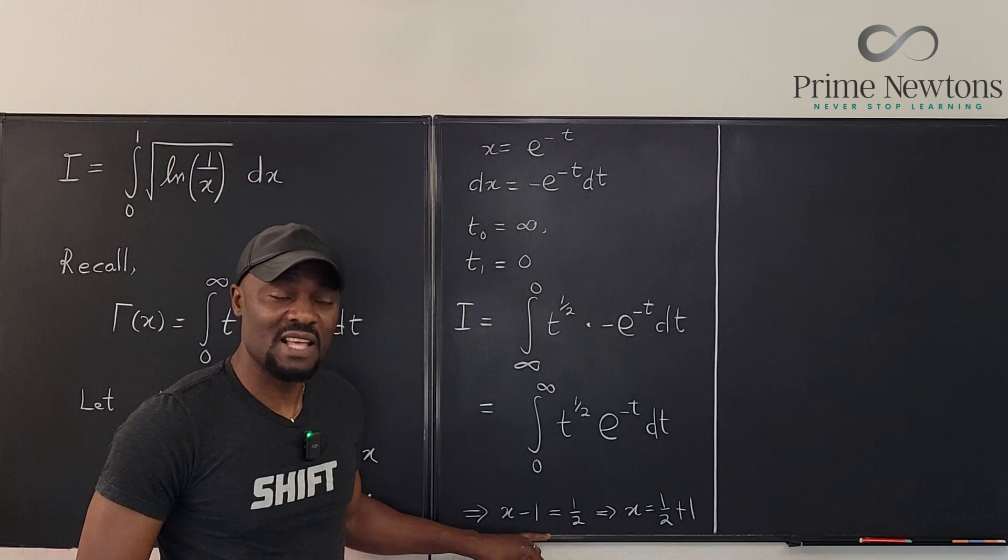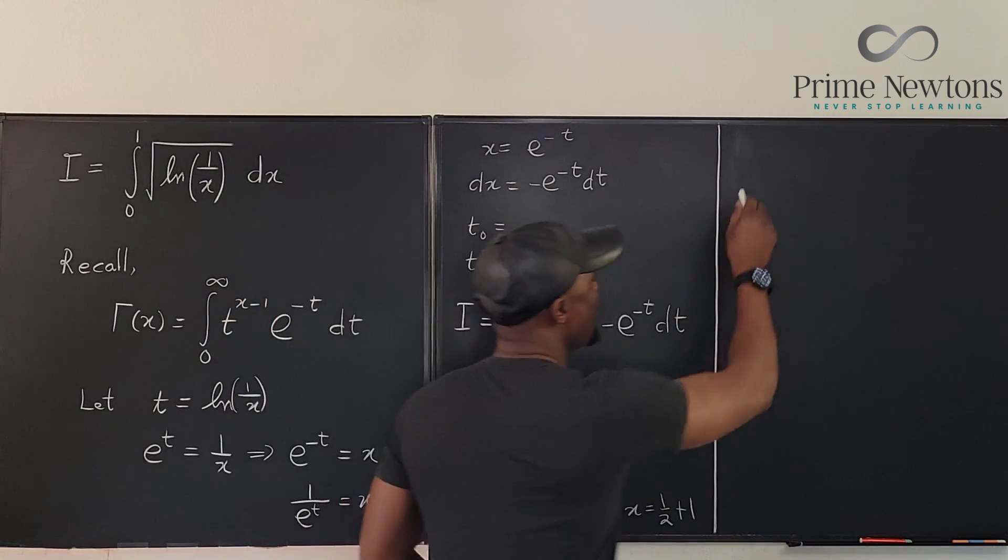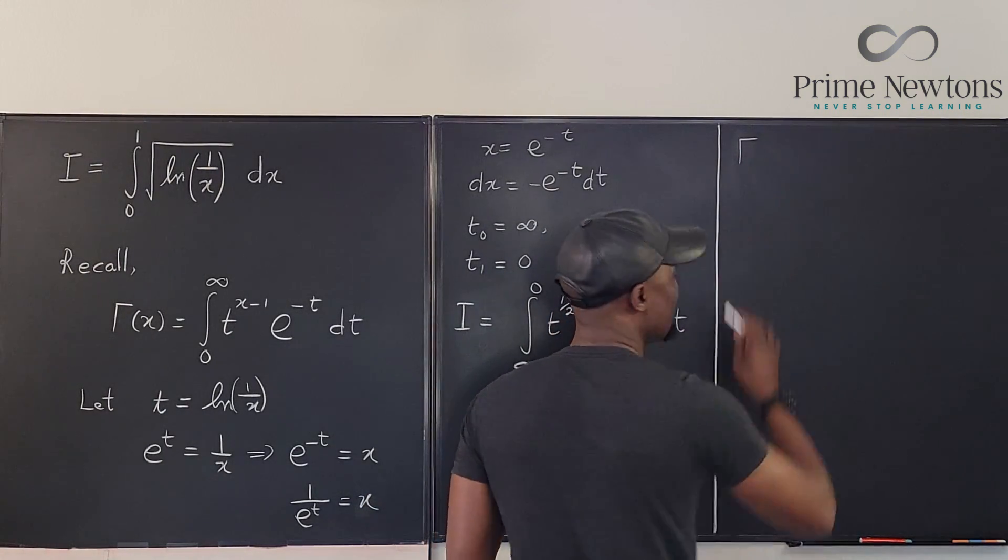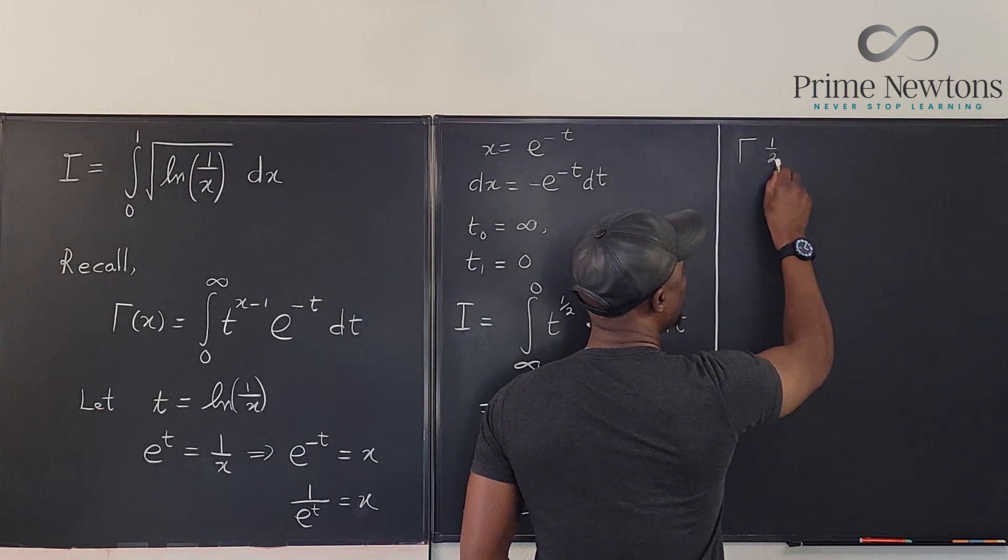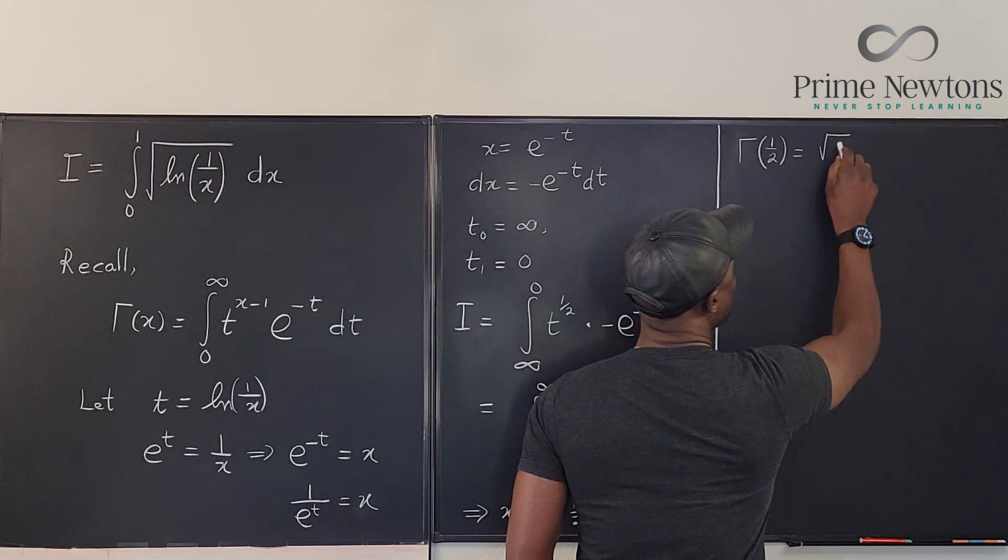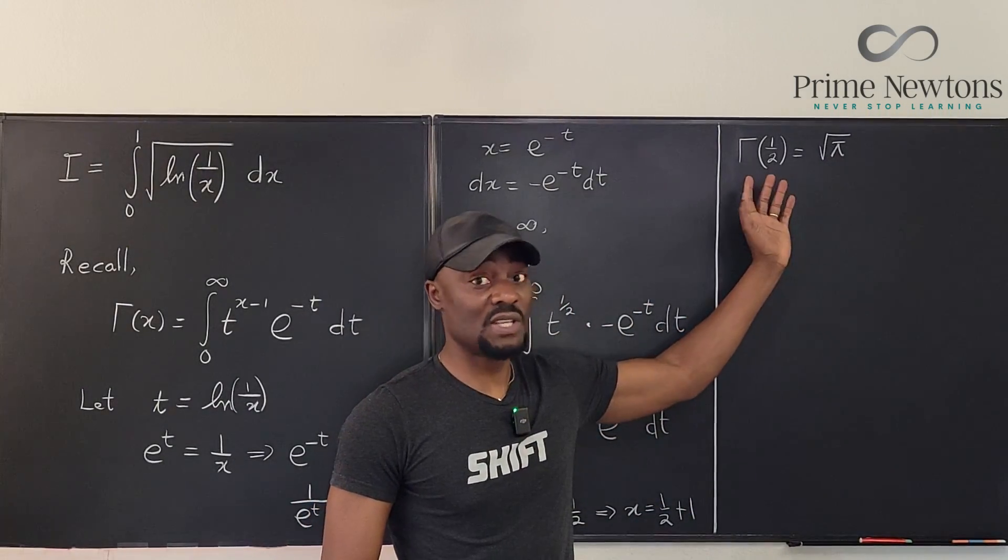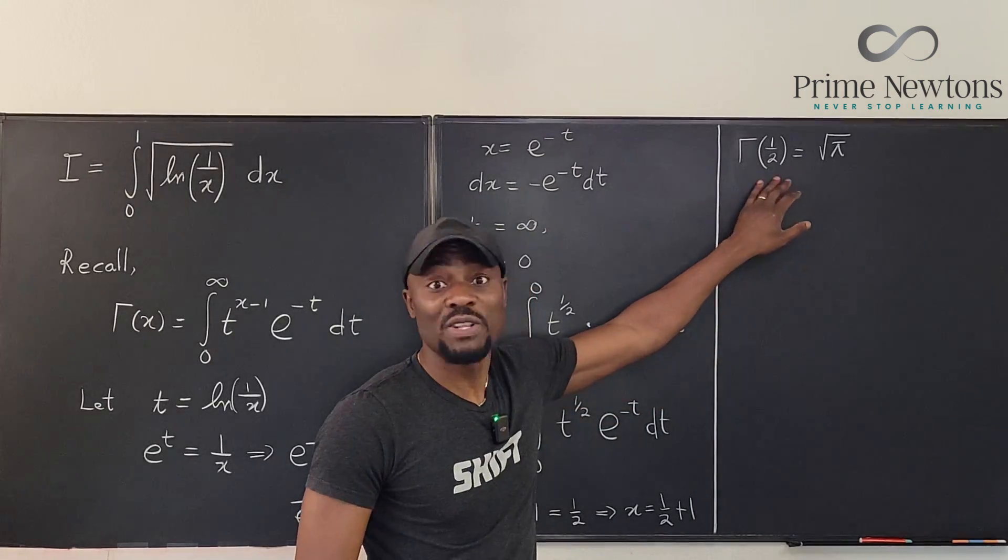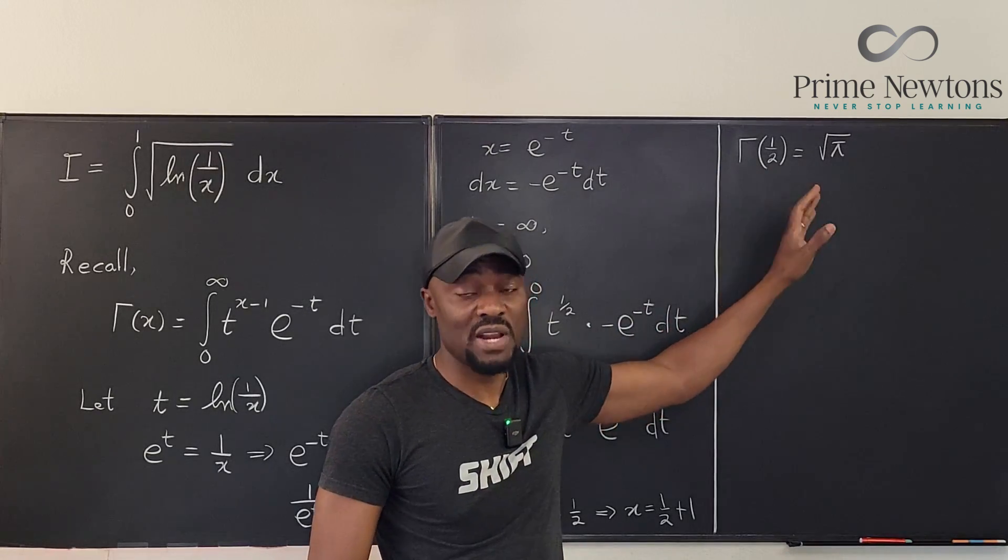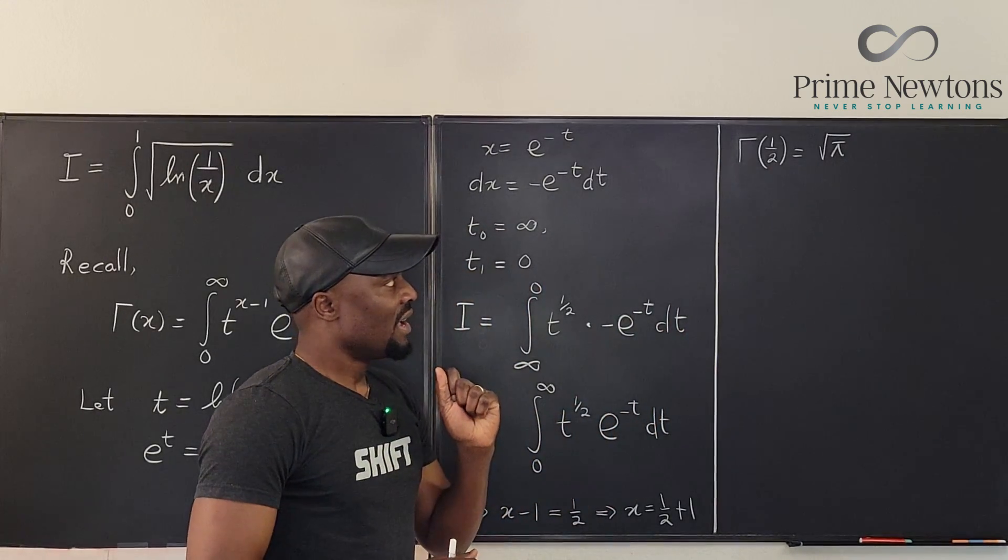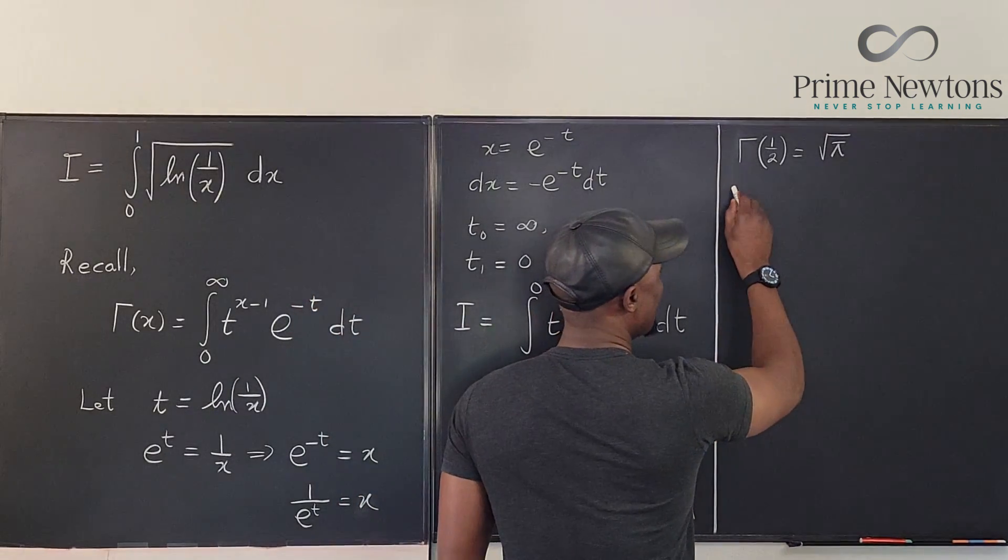Now the reason why this is important is that from the Gaussian integral we know that the gamma of 1 half is the square root of pi. As a calculus student you have to know this. If you're using the gamma function this always comes in handy. Very helpful because then you can manipulate whatever you get starting from gamma of 1 half.